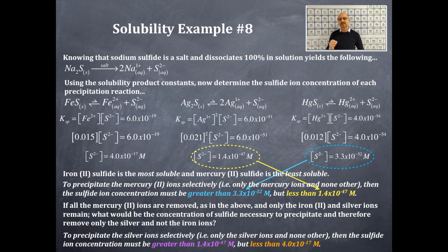So, to precipitate the silver ions selectively, i.e. only the silver ions and not the iron in this case, then the sulfide ion concentration must be greater than 1.4 times 10 to the negative 47, and that is where this value is coming from, and less than 4.0 times 10 to the negative 17. That's where that value is coming from.